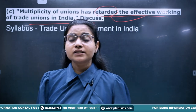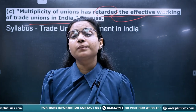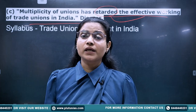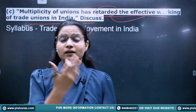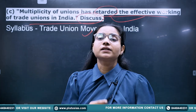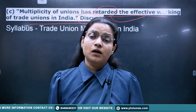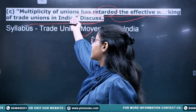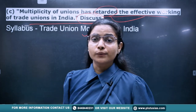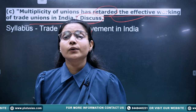When there are many trade unions and no unity, collective bargaining and industrial dispute resolution become impossible. Management exploits this division, causing inter-union rivalry. Since the word 'discuss' is used, divide your answer into maximum dimensions: define multiplicity of trade unions, explain the reasons for multiplicity, explain how it retards effective working, and provide the way forward on what can be done to remove this problem.